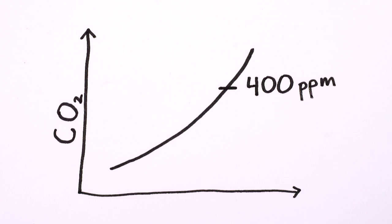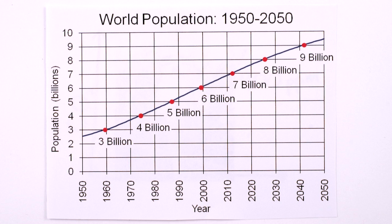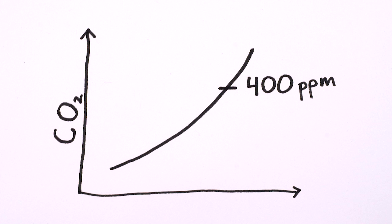In some respects, 400 ppm is just an arbitrary figure, an attractively round number like the 4-minute mile, or the 7 billion mark for world population. But it indicates that we've reached a new phase of our experiment.